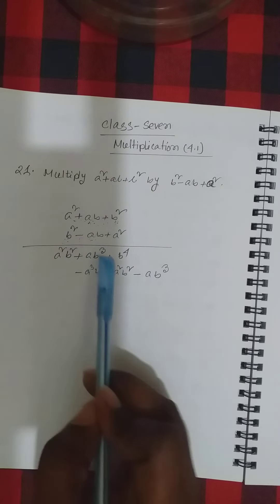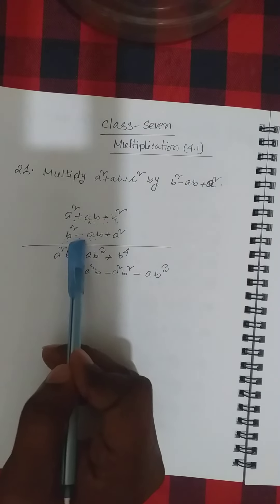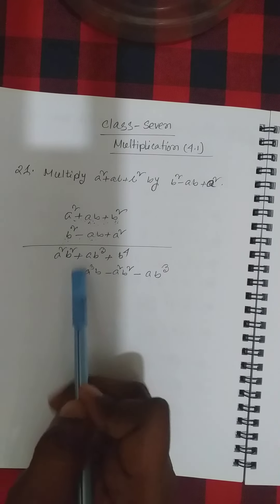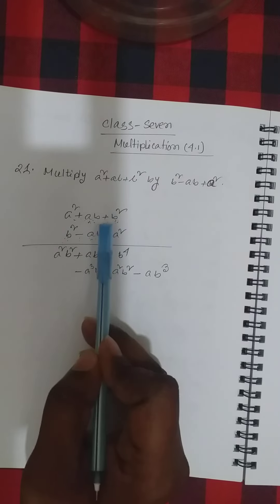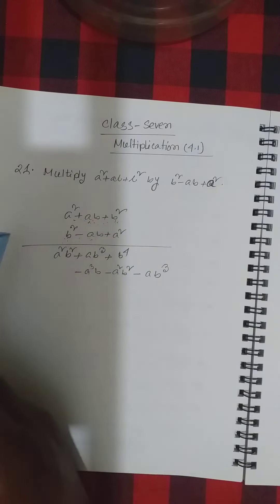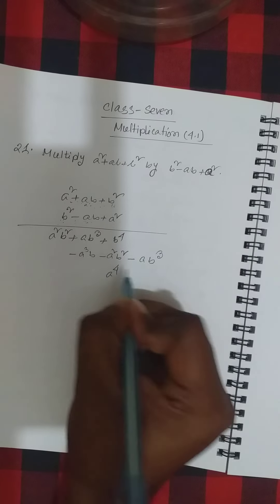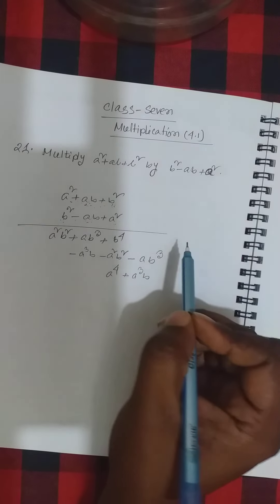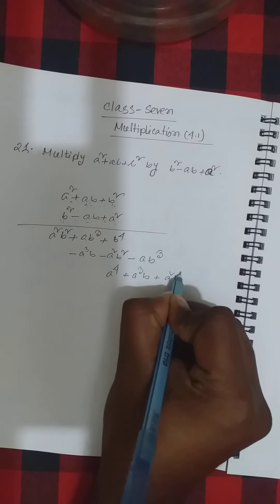Now we multiply a-squared plus ab plus b-squared by a-squared. So we can write a-squared times a-squared which means a to the power 4, plus ab times a-squared which will be a-cubed·b, plus b-squared times a-squared which means a-squared·b-squared.